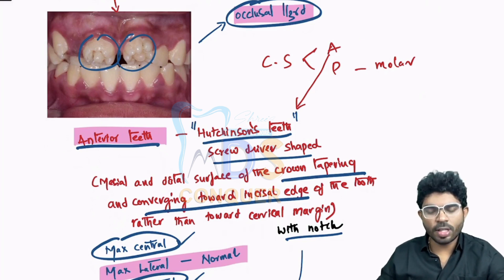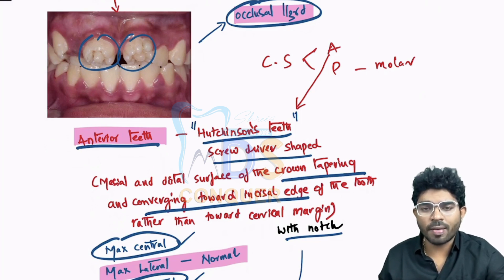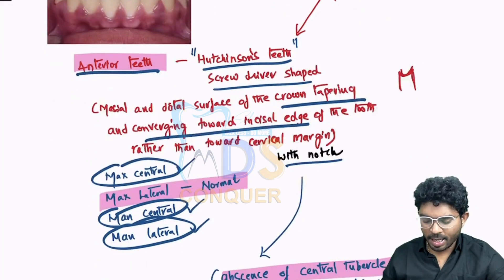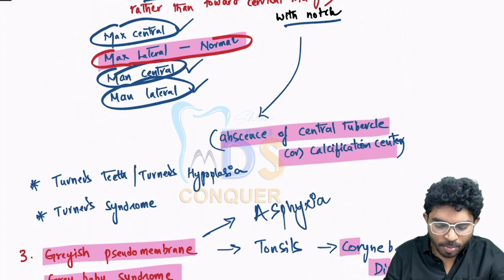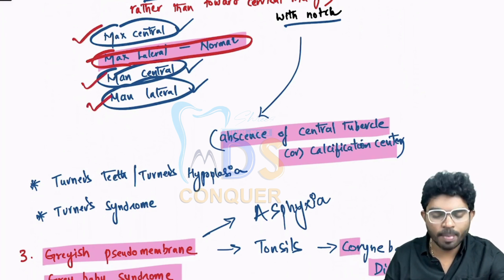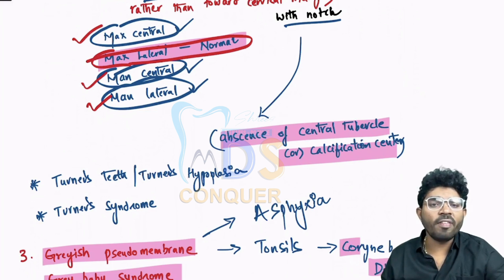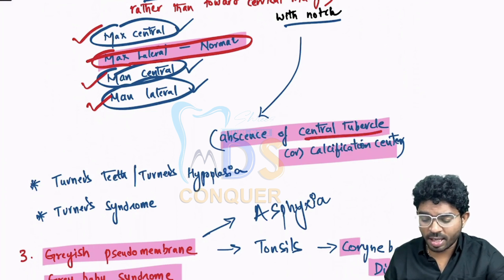The mesial and distal surfaces of the crown are going to taper and converge towards the incisal edge rather than towards the cervical margin, with an incisal notch. This is basically due to absence of the central tubercle or calcification center. Among the four incisors, the maxillary lateral is going to be normal. Maxillary central, mandibular central, and mandibular lateral are affected. So if asked which incisor is unaffected, the answer is the maxillary lateral, according to Shafer's reference.